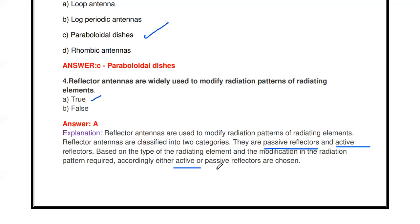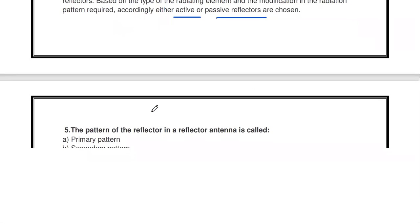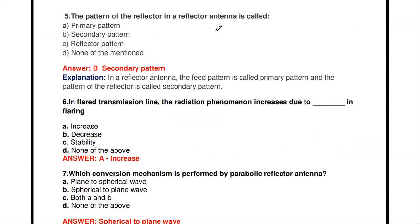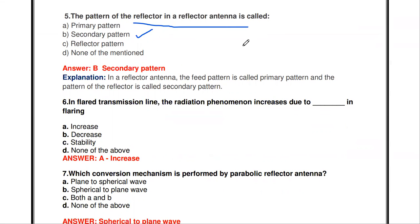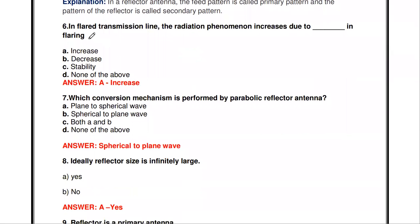Based on the type of radiating element and the modification in the radiation pattern required, we may choose either an active reflector or passive reflector. The next question: the pattern of the reflector in a reflector antenna is called (a) primary pattern, (b) secondary pattern, (c) reflector pattern, (d) none. The radiation pattern of the reflector is called the secondary pattern. The primary pattern is the feed pattern.